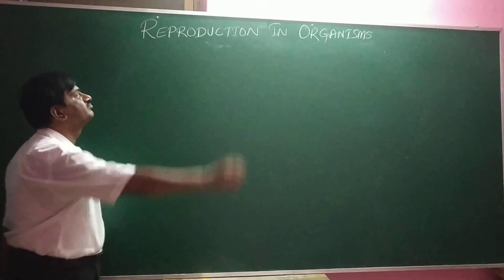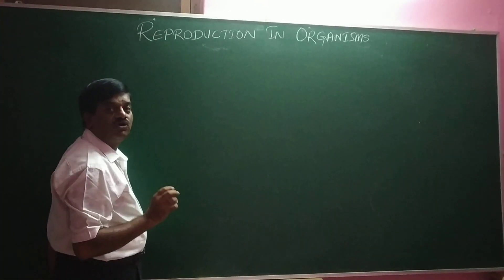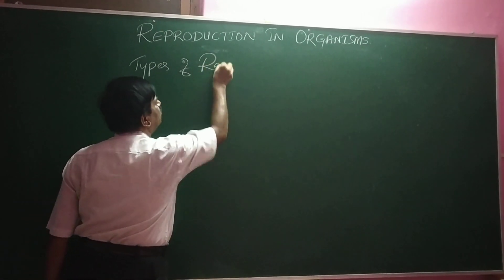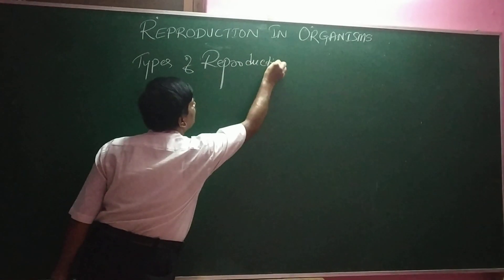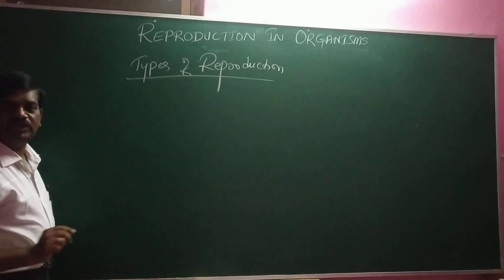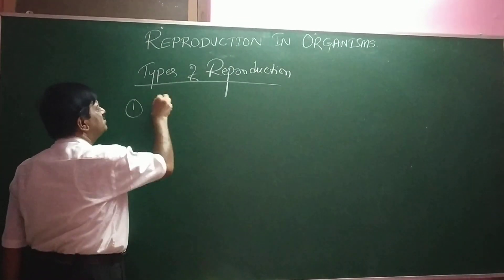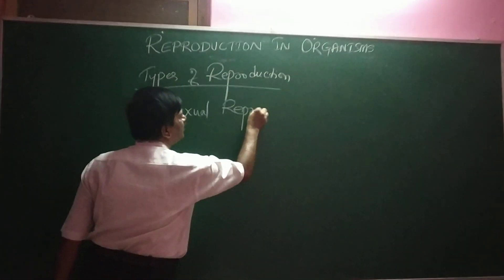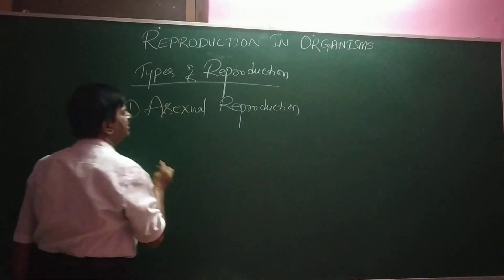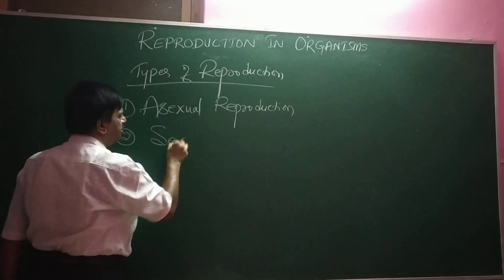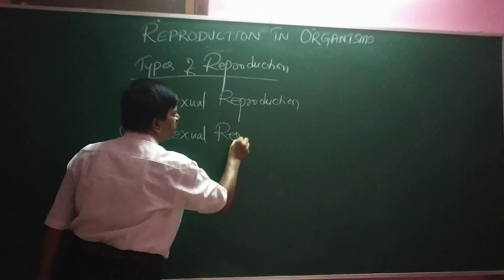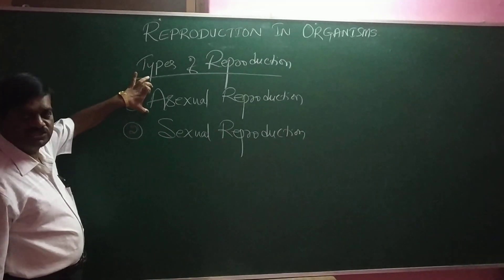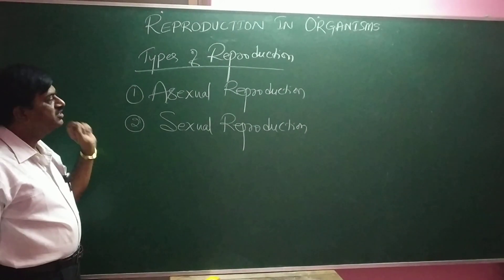Dear students, today we are talking about types of reproduction. There are two types of reproduction: one is called asexual reproduction, and the second one is called sexual reproduction.